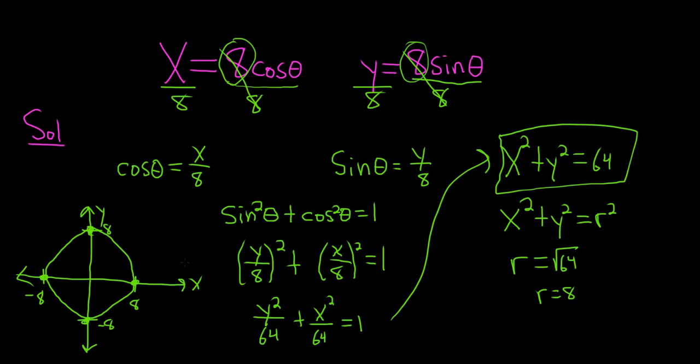So that would be the graph. The only thing we're still missing, though, is the orientation. So I'm going to show you how to find that. To find the orientation, we make a table. So here we have theta, and then here we have x, and then here we have y.